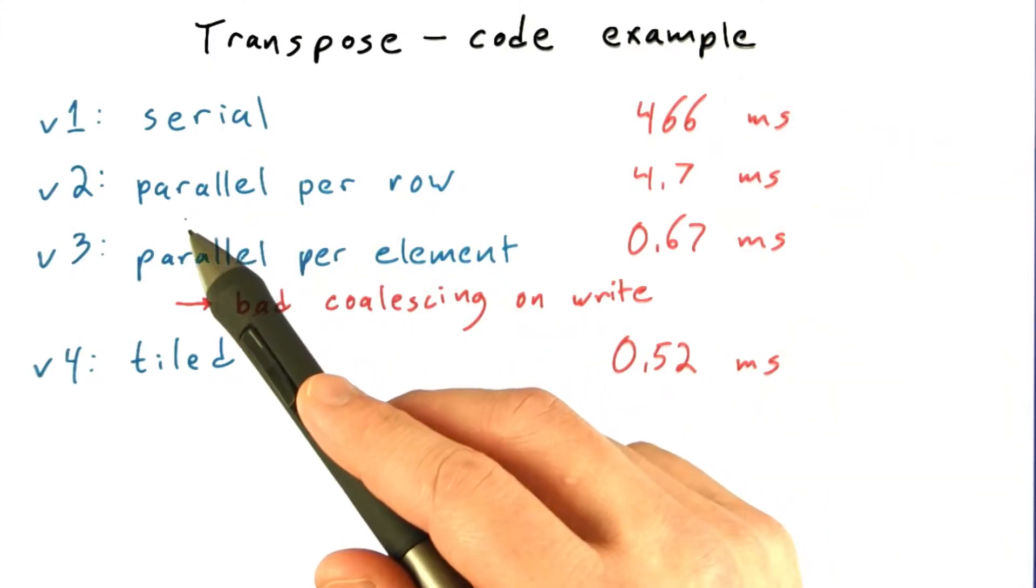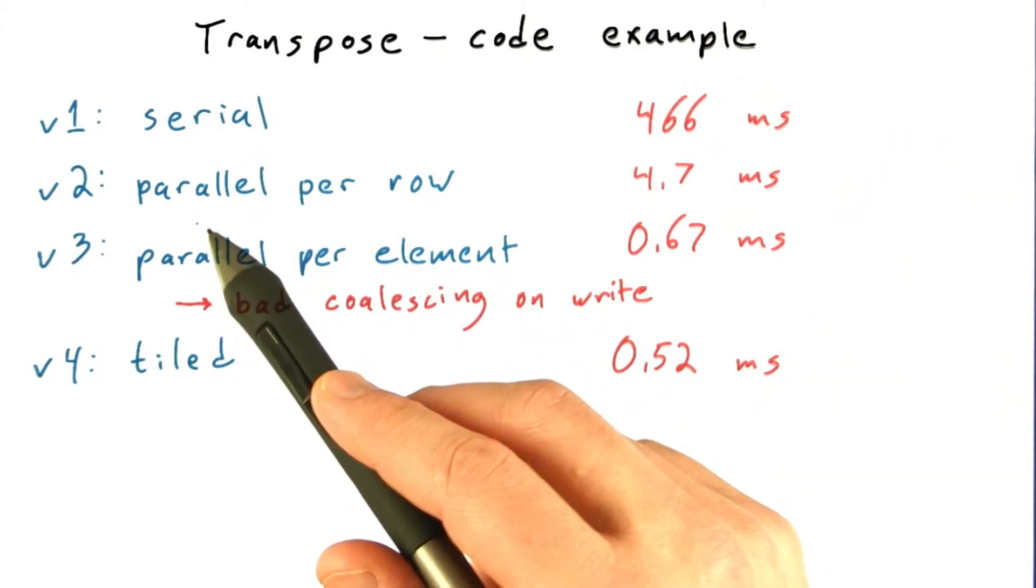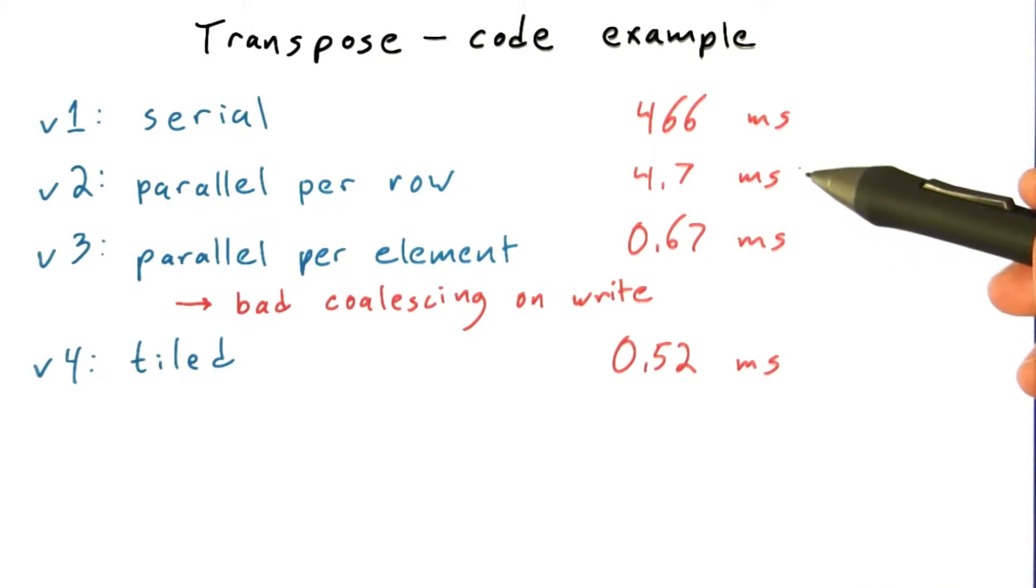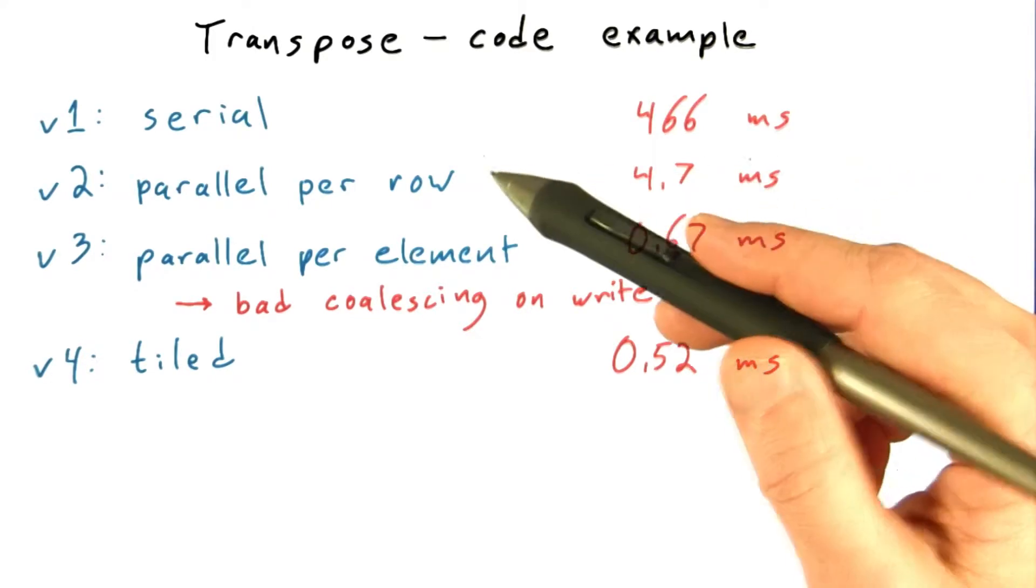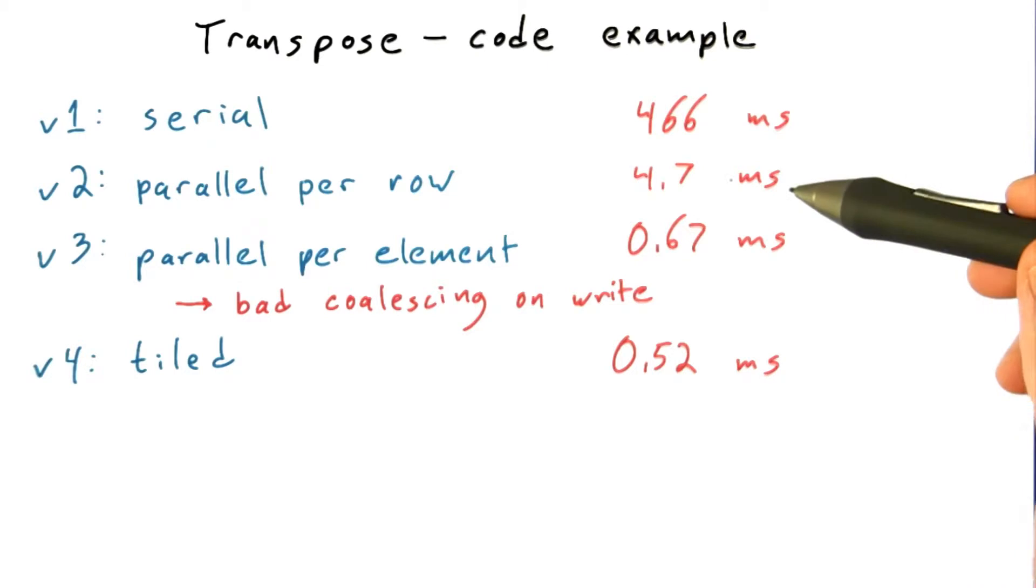Then we had a parallel per row version of the code that was also pretty simple to write and assigned one thread per row and a single thread block. Again, did not get great performance, although a huge improvement, a factor of about 100.